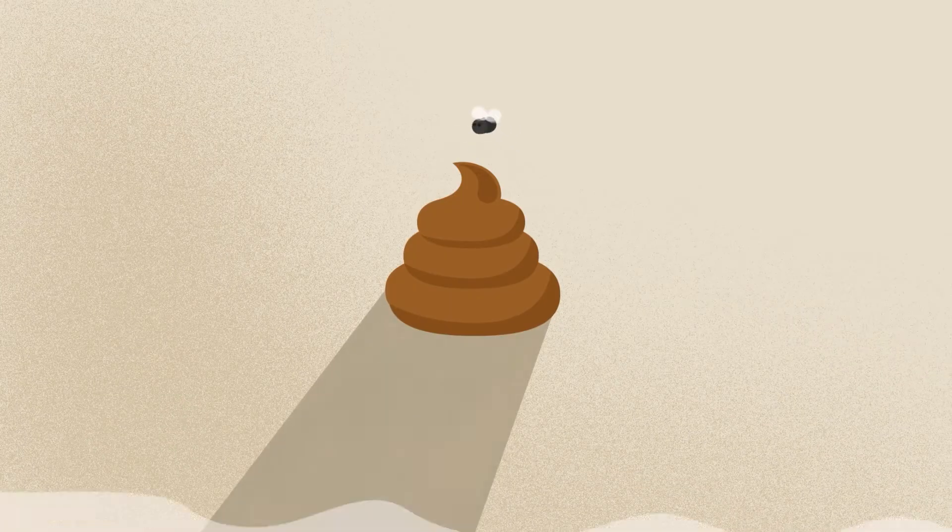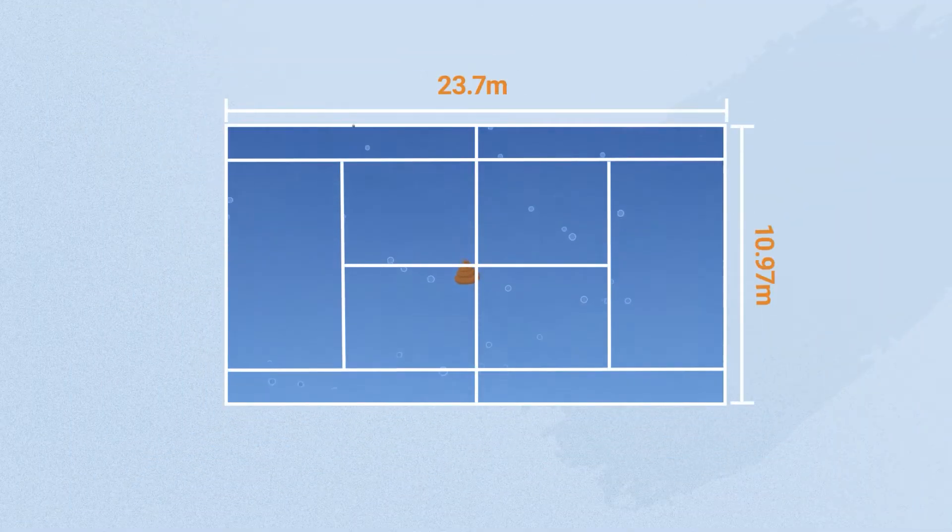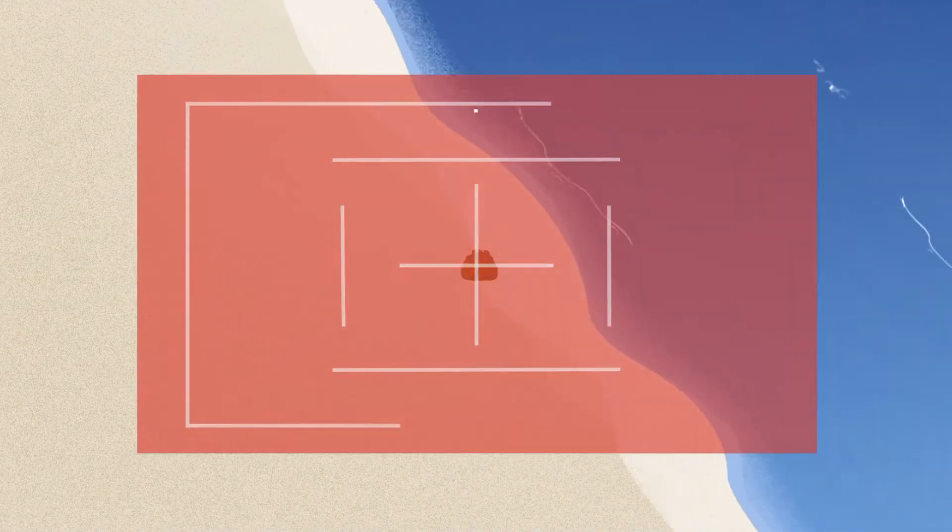A single dog poo can contaminate an area of water the size of a tennis court. It doesn't take too many more to close an entire beach.